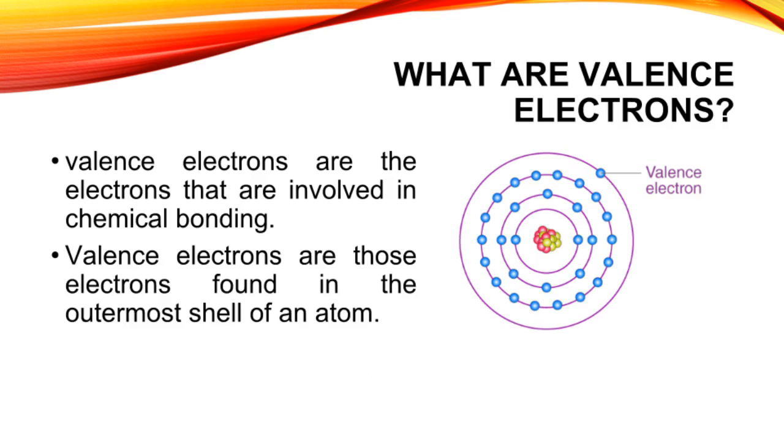What are valence electrons? Valence electrons are those electrons found in the outermost shell of an atom. In other words, these are the electrons that can be gained or lost during a chemical reaction.